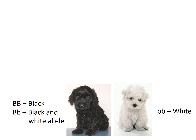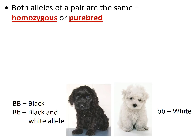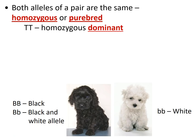Going back to those puppies — a black dog could have had two alleles for black fur, or one allele for black and one for white. The only way to get white is if you have two alleles for white. If they have two dominant alleles (BB) or two recessive alleles (bb), we say that they're homozygous, or purebred. BB is homozygous dominant; bb is homozygous recessive. Homo meaning same.